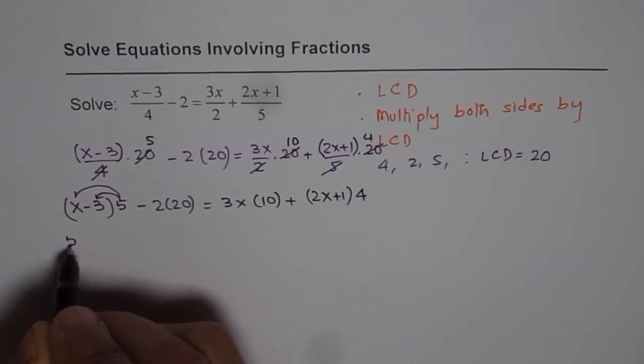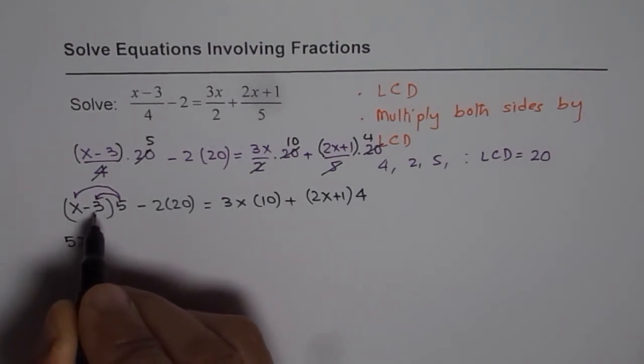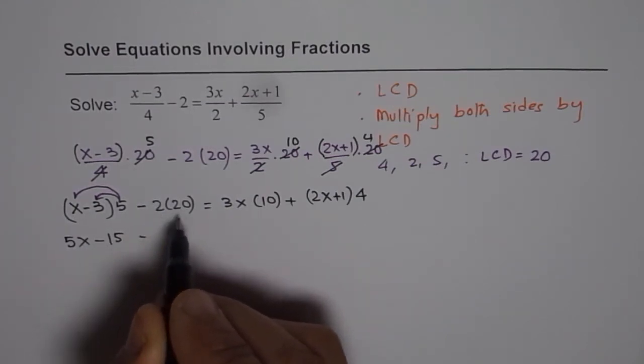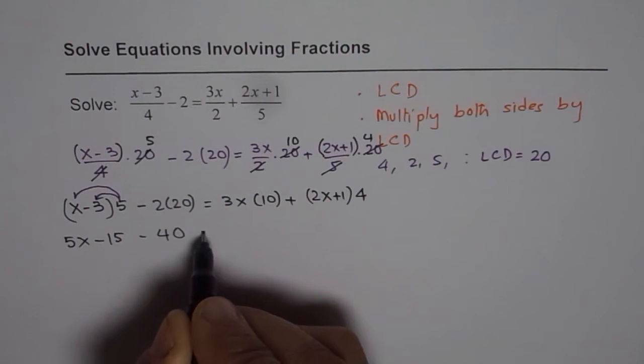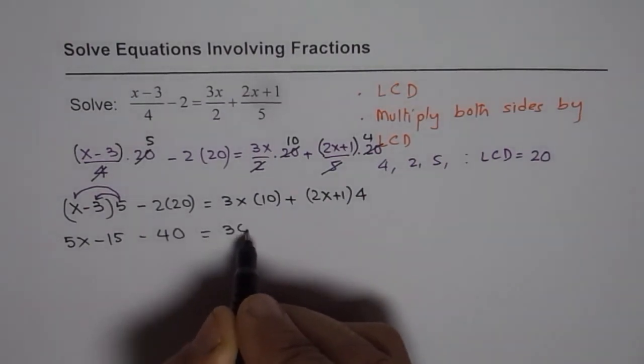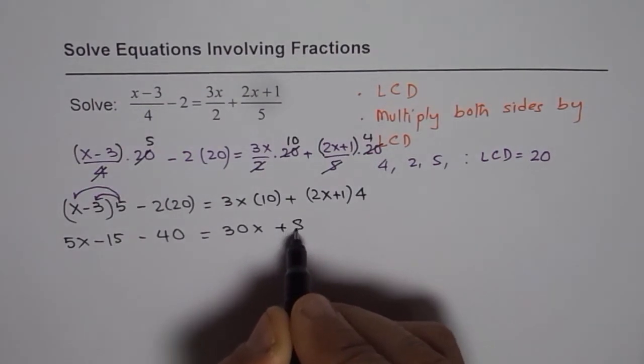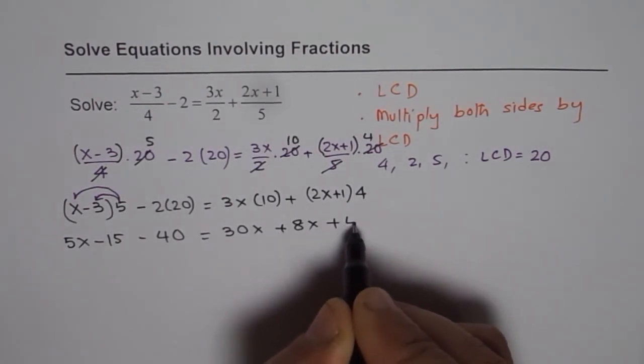5 times x is 5x, minus 3 times 5 is minus 15. Minus 2 times 20 is 40 with minus sign. Here we get 30x. Then we have to multiply 4 with both the numbers. So we have 8x plus 4.